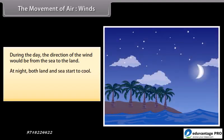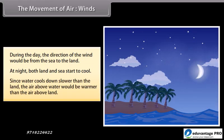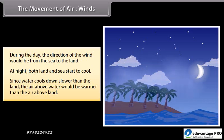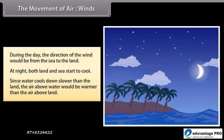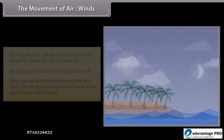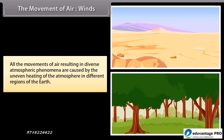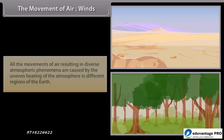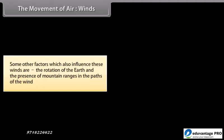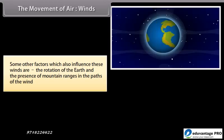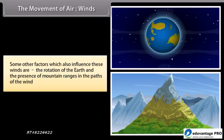At night, both land and sea start to cool. Since water cools down more slowly than land, the air above water would be warmer than the air above land. All movements of air resulting in diverse atmospheric phenomena are caused by the uneven heating of the atmosphere in different regions of the Earth. Other factors which also influence these winds are the rotation of the Earth and the presence of mountain ranges in the path of the wind.